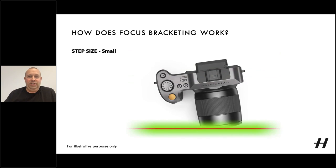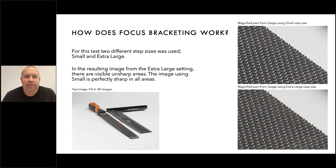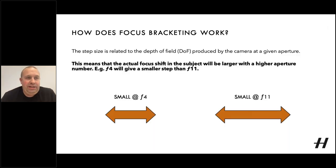If we don't get our step size correct, here's an example of how it can be. In this test, both small and extra large steps were used. You can see on the close-ups on the right-hand side that with the extra large setting there are some unsharp areas, whereas the image using the small step is perfectly sharp in all areas. The complication is that the step size of small, medium, large, extra large is not always the same size in the distance it steps, because the size is related to the depth of field produced at the camera's given aperture.